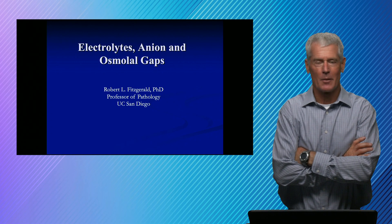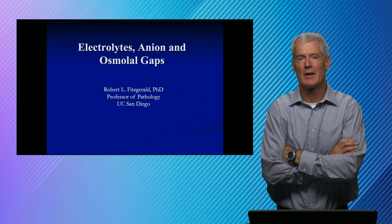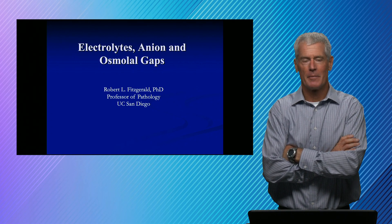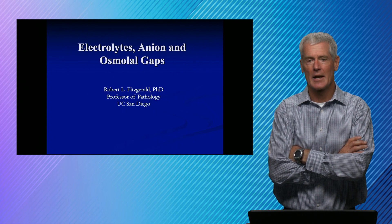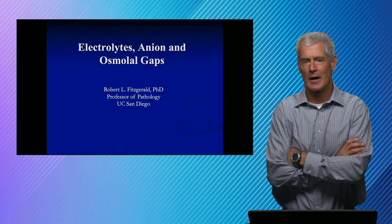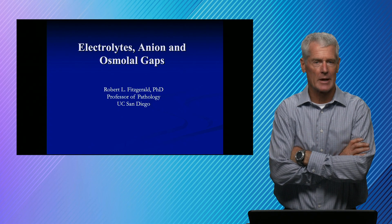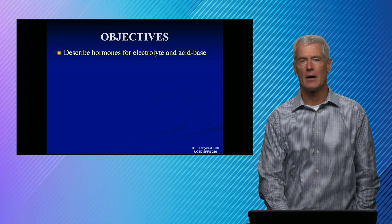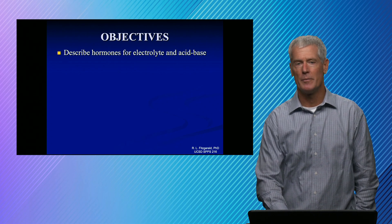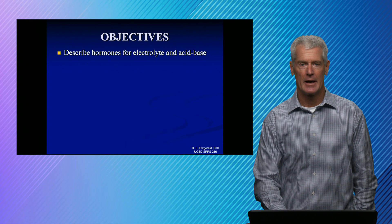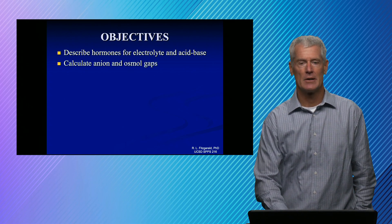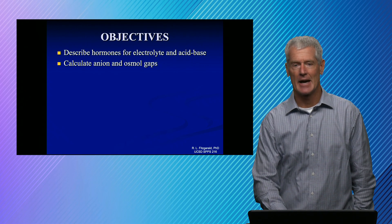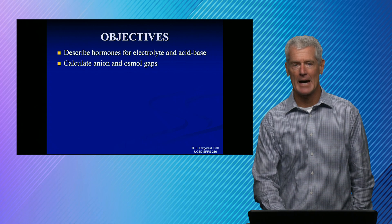Welcome back to Quick Hits in Lab Medicine, I'm Rob Fitzgerald. We're going to spend about the next 15 minutes talking about hormones that regulate electrolyte balance, anion gaps and osmolal gaps, and how we use these clinically. The objectives are to talk about ADH or vasopressin, and aldosterone, that regulate electrolyte and acid-base balance, how to calculate anion gaps, osmolality, and osmolal gaps.